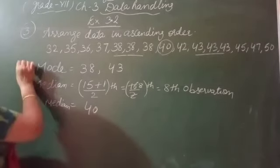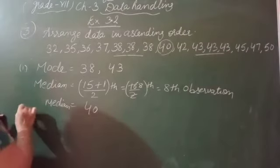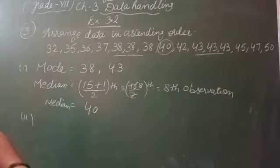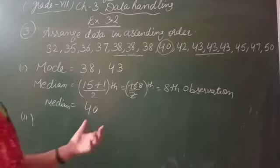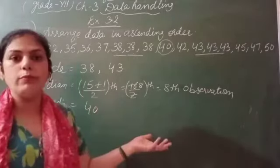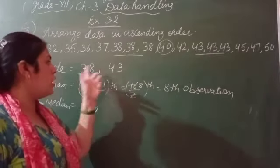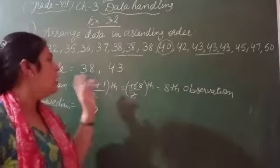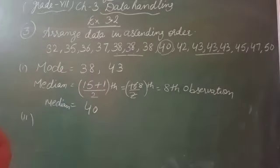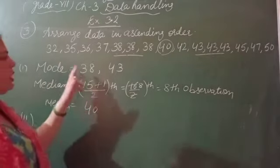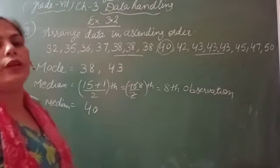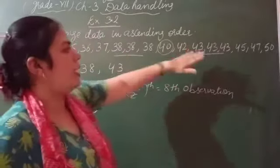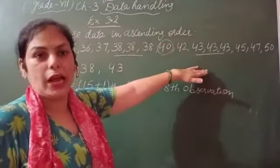Now the second part asks: is there more than one mode? We have two values as mode, not a single value. Here, two observations have the same number of times occurring.